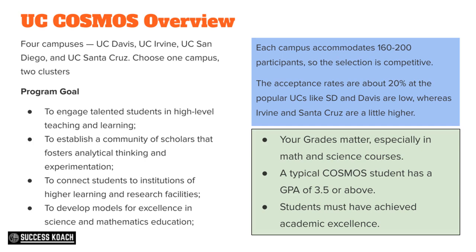You apply for one campus among the four, and within that campus you can apply for two clusters. I always recommend students apply for more than one cluster, because chances of getting in are low — it's a very competitive program. When you look at the program's goal, think of their vision and what kind of students they're looking for. Clearly, they are looking to build a community of scholars, fostering analytical thinking and experimentation. This program is very much set up for academia.